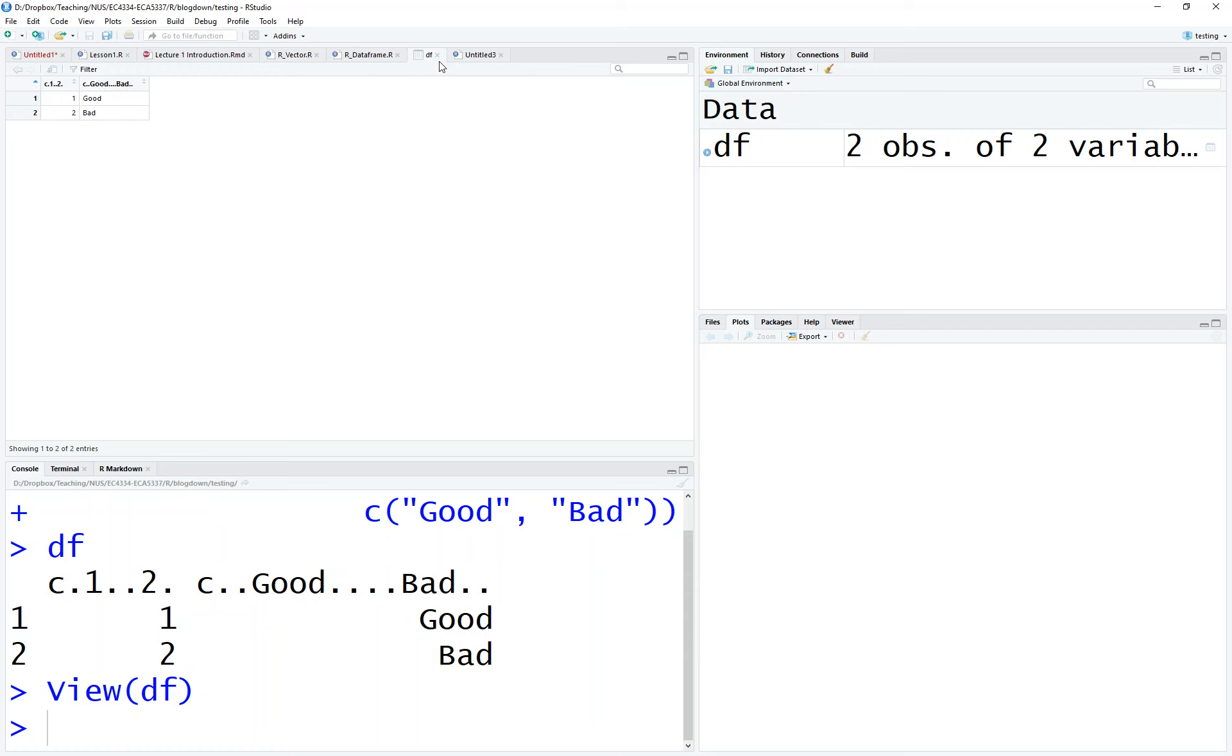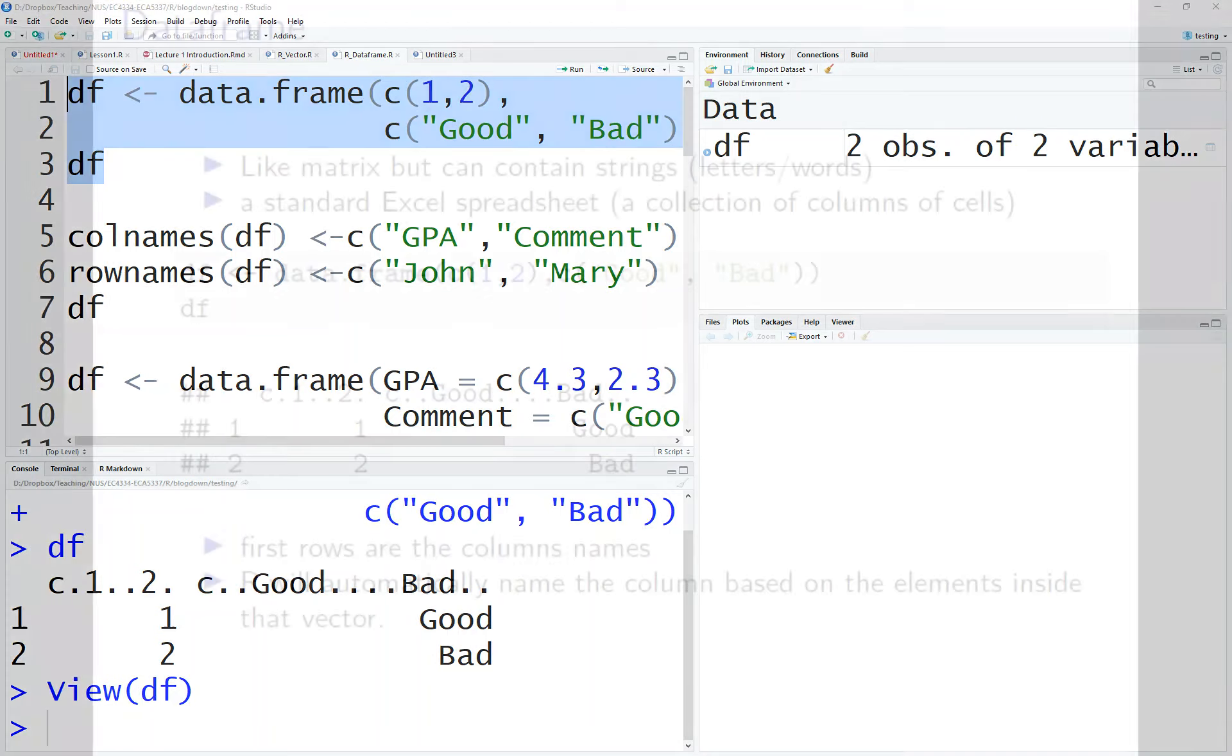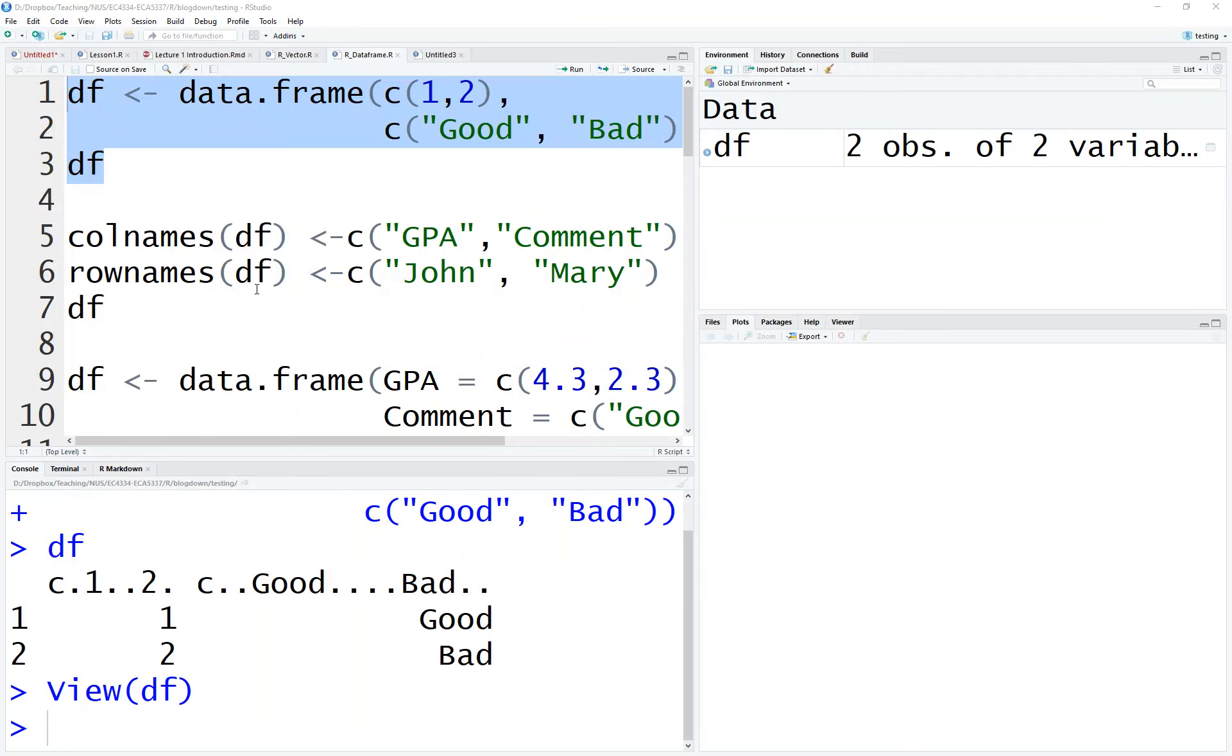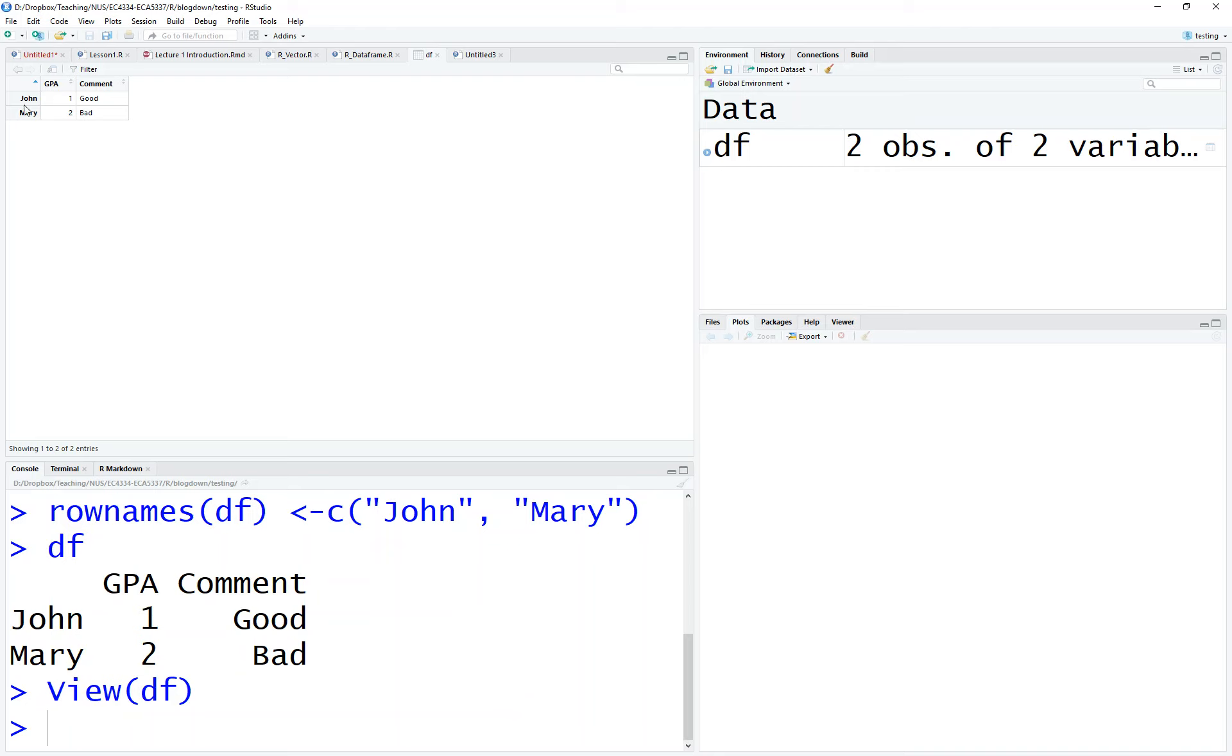The next thing is naming. Instead of one and two, you can give column names and row names. Of course, names are character vectors. If you do this and look at the spreadsheet again, you'll see what happened. Let's go back to R, click this and run it. Then you get 'GPA' and 'Comment', and the row names become 'John' and 'Mary'.